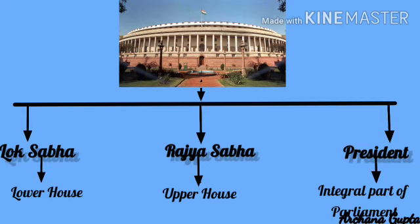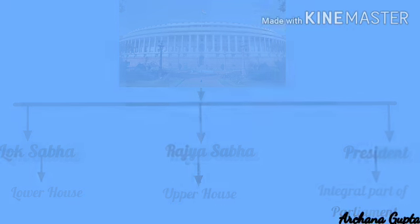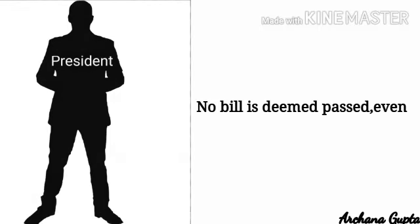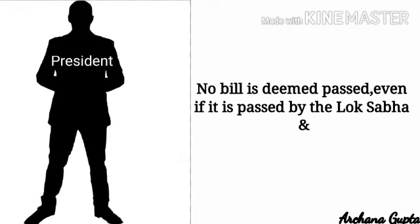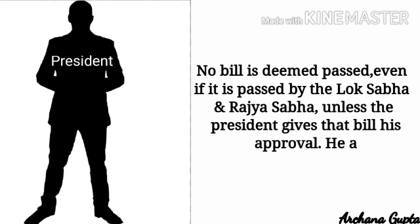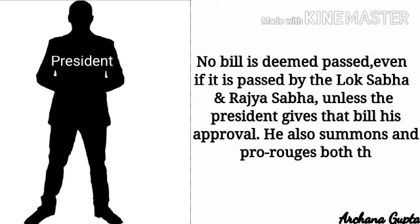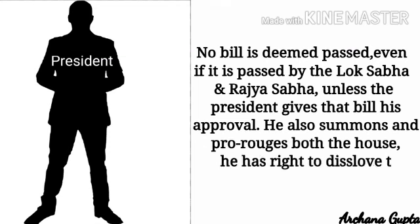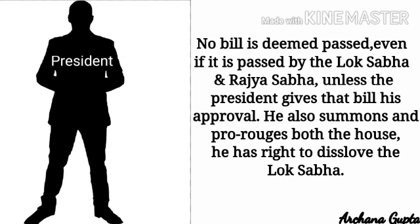No bill is deemed passed even if it is passed by both the Lok Sabha and the Rajya Sabha unless the President gives his approval. Besides this, he also summons and prorogues both houses, has the right to dissolve the Lok Sabha, and addresses both houses. That is why the President is also a main organ of the Parliament.